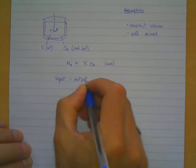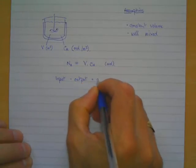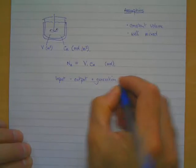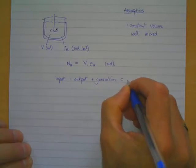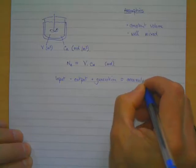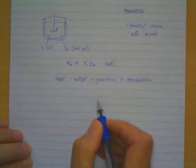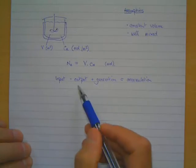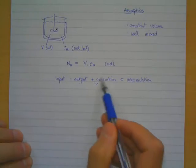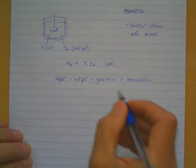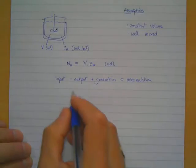And that is that input minus output plus generation equals accumulation. So what goes in minus what comes out plus anything that's generated equals what builds up in the system.